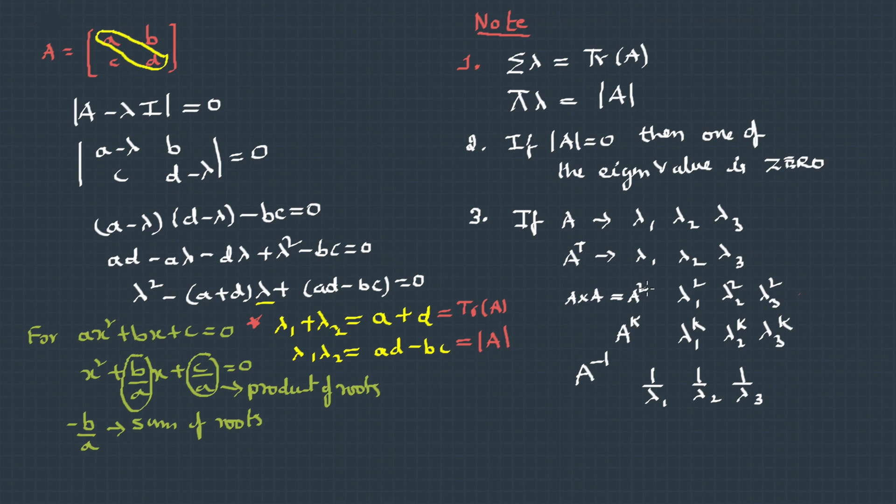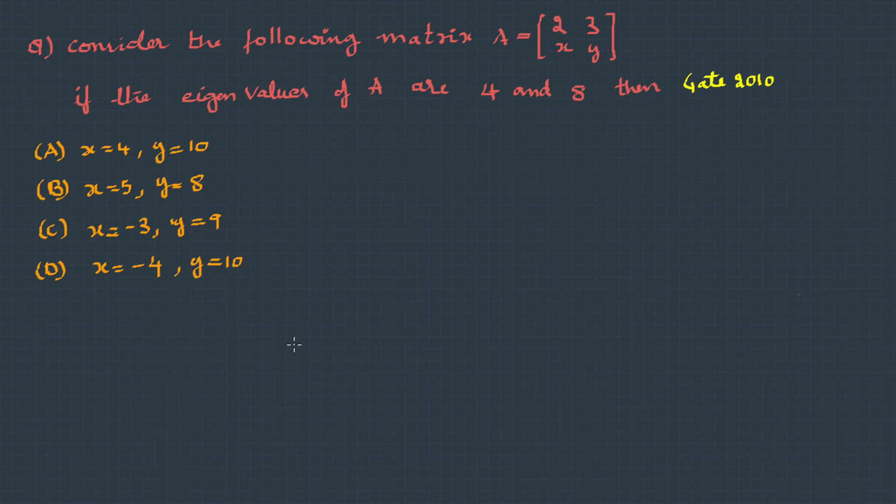These properties are used in solving the numericals in GATE questions. Let's take few examples. Here is a question asked in GATE 2010. Consider the following matrix A, with elements 2, 3, x, y. If the eigenvalues of A are 4 and 8, then we need to find which values for x and y are correct. Here, we will be using the property of eigenvalues. We know that sum of the roots is the trace of the matrix, and the product of the roots is determinant of the matrix.